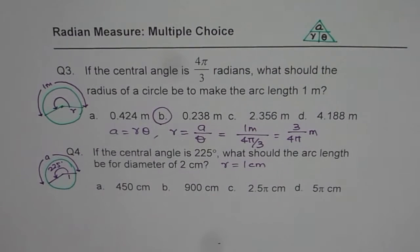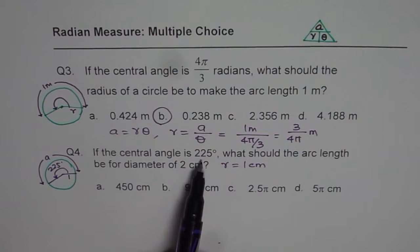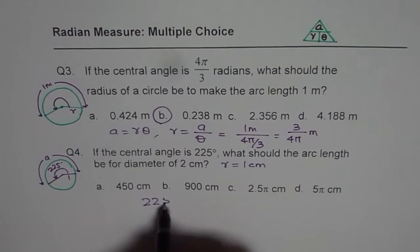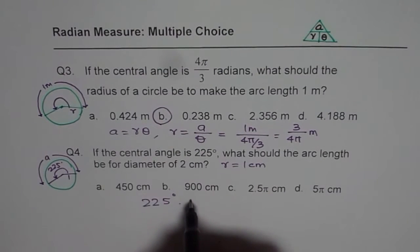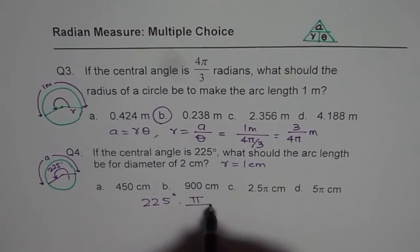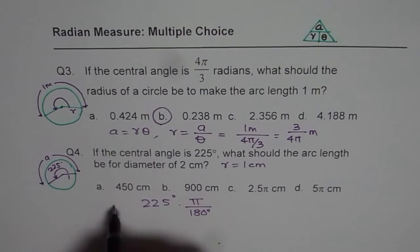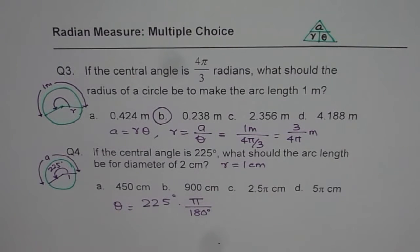Now remember one thing, that we need to convert angle in radians before getting the answer. So first convert the angle from degrees to radians, that means you will multiply by pi, divide by 180 degrees. So that becomes the theta, the angle for us.